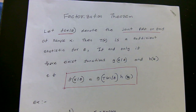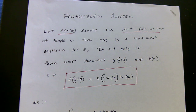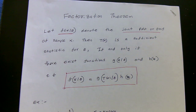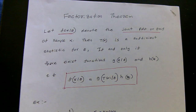Hi everyone. Last time in our sufficient statistic video, we calculated the sufficient statistic based on the definition. But it turns out that finding a sufficient statistic based on the definition will not be an easy task in every situation, because we should have an intuition about what our sufficient statistic is. In most situations, we will not have that intuition in advance. So the alternative and easiest way to find the sufficient statistic is based on the factorization theorem.